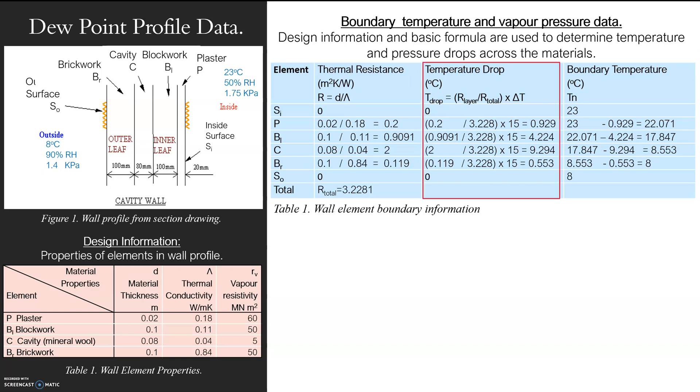So temperature drop. How am I going to now determine how quickly the temperature drops or what the temperature drop is between 23 and 8? It's not a straight line because each material resists the temperature thermally at a different rate. So what I do is I turn those resistances. So each layer is a ratio of the total for my whole wall.